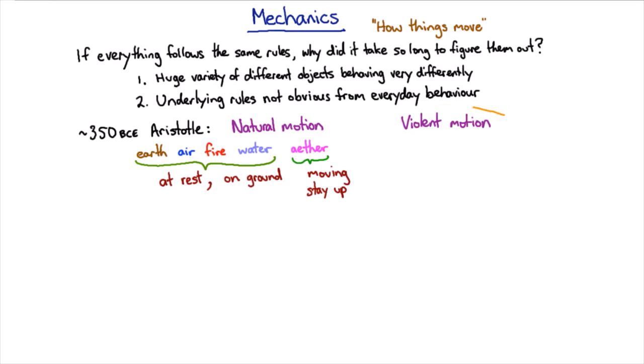And then violent motion was everything that you would do to make something behave against its natural motion. So, for example, if you throw a rock, which is mainly made of earth, the natural motion is for it to be at rest and on the ground. And you have to apply some force to it in order to make it move.